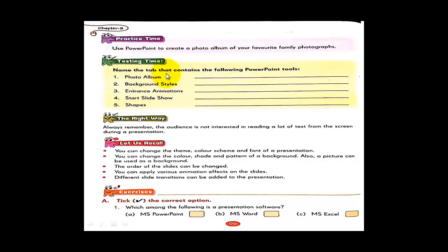Testing time — name the tab that contains the following PowerPoint tools. In which tab does the Photo Album tool appear? Maybe the Design tab? Also identify the tab for background styling, enhance animations, transitions, and slide show. These are PowerPoint tools and you have to write in which tab each one is found.